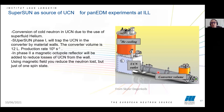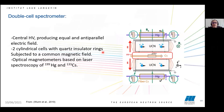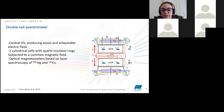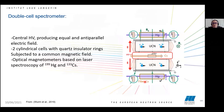After the conversion between cold neutrons and ultra-cold neutrons, the ultra-cold neutrons are collected and exit through the outlet. In the second phase, magnetic shielding reduces neutron losses. The cell at ILL is a double cell, with a central high voltage section that produces equal and anti-parallel electric fields. There are two cylindrical cells with quartz insulating rings, filled with UCN, and there are optical magnetometers with mercury.